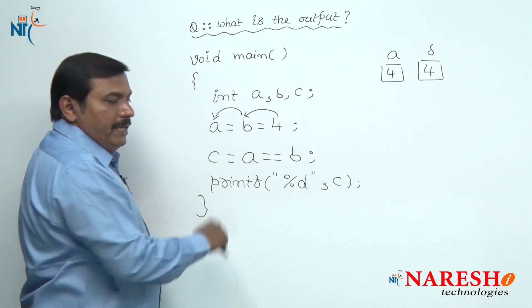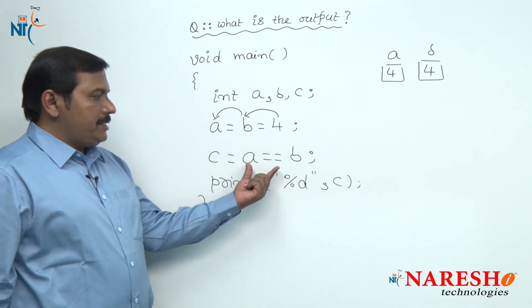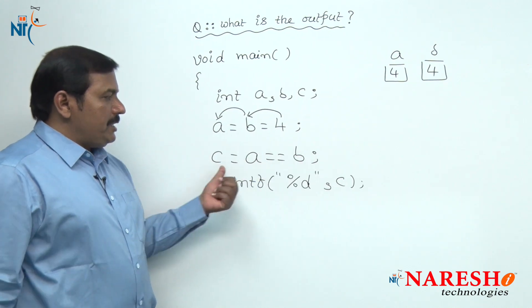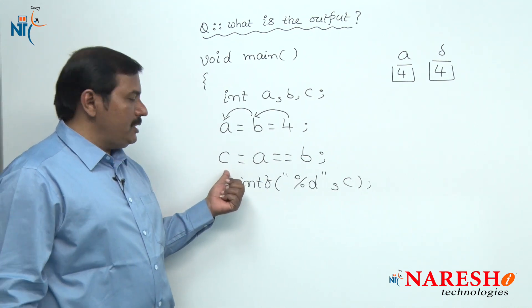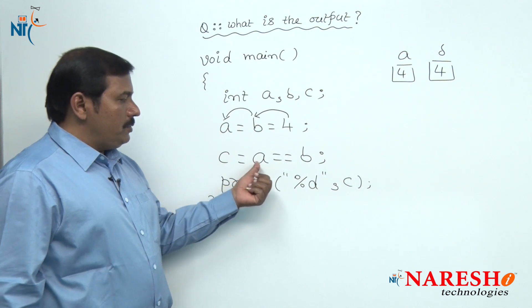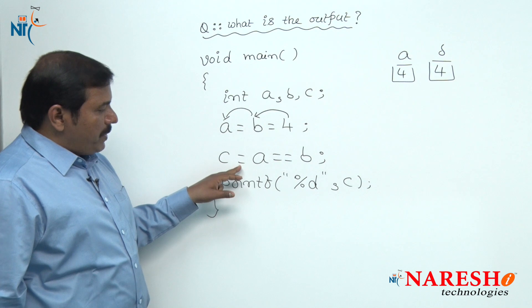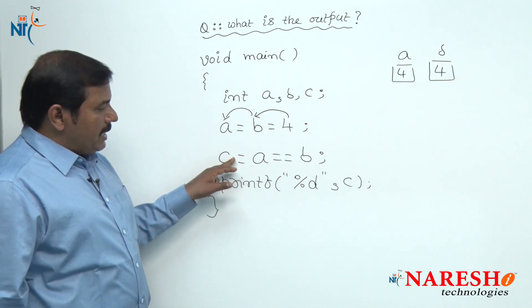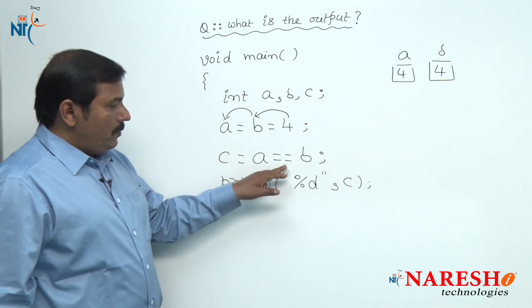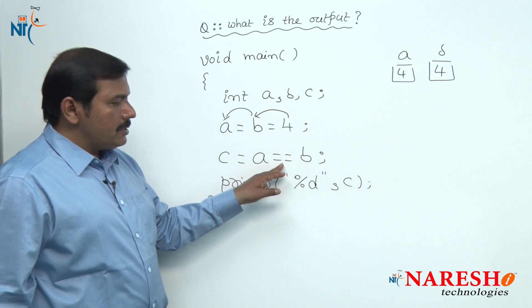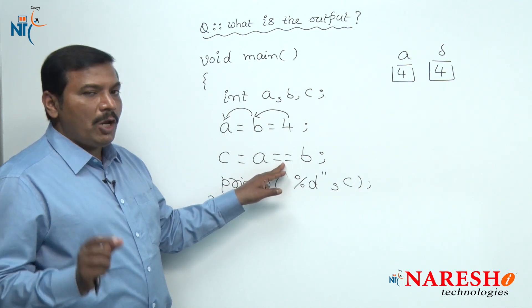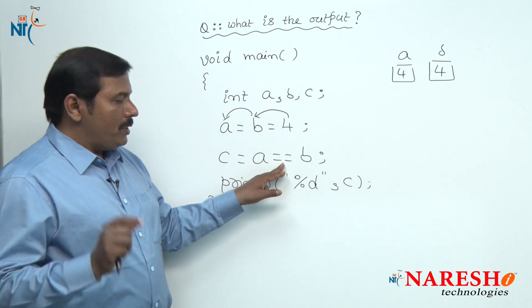Now coming to the statement, in the statement, this expression is an assignment expression: C equals A equals B. In this expression, this is an assignment operator, whereas this operator is the relational operator, equals to.